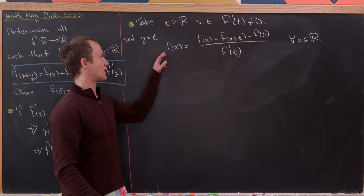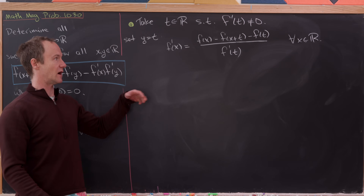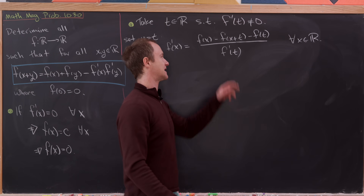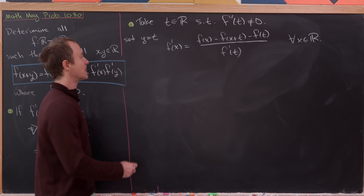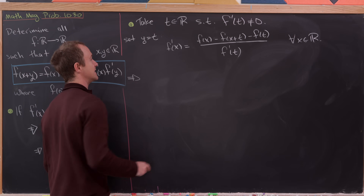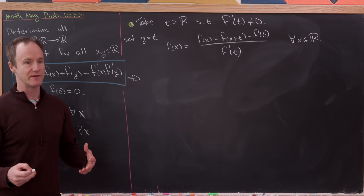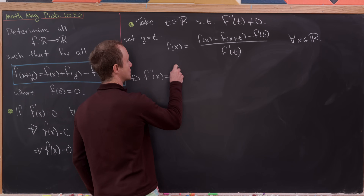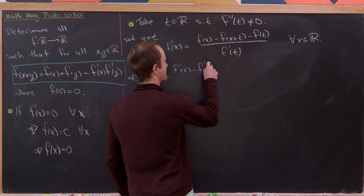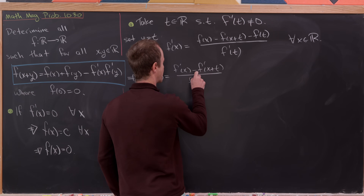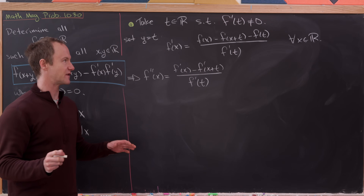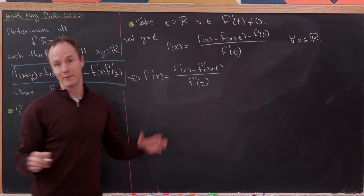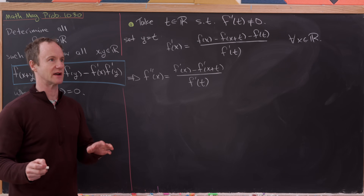We can write the derivative in terms of the original function and a bunch of constants — f(t) and f'(t) are both constants. So we can use this equation to find higher derivatives. We have f''(x) = [f'(x) - f'(x+t)] / f'(t). Notice I don't need to differentiate f(t) since that's zero, and f'(t) in the denominator is a constant, so no quotient rule needed.